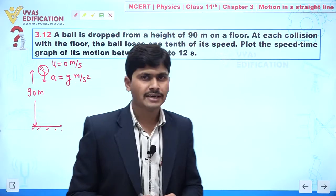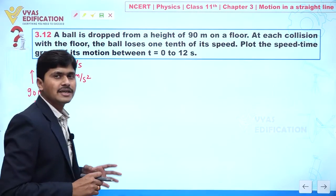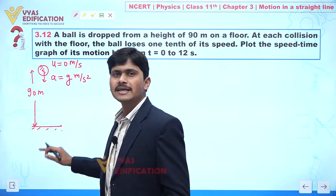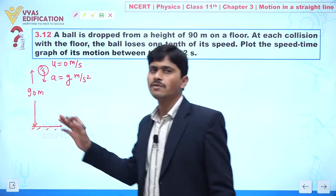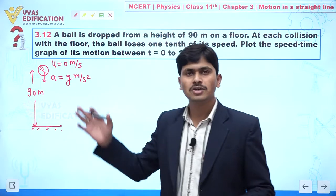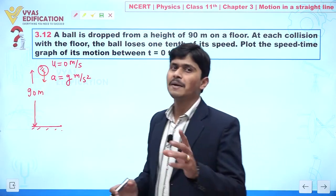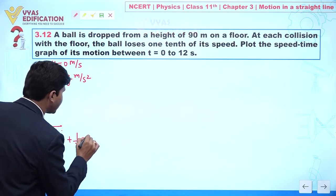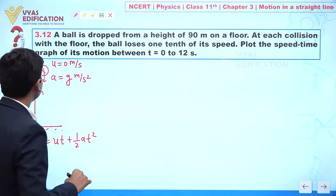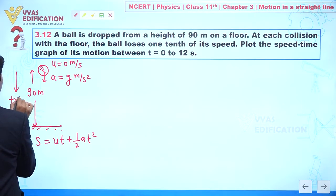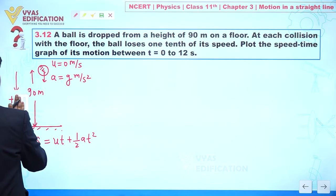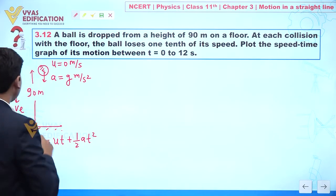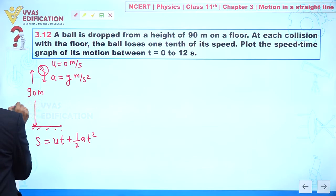Our first objective is to find the total time taken by this body to strike the ground. In the case of free fall, this body is falling under the influence of gravity, so we can apply the equation of motion: s equal to ut plus half of at squared. Taking the downward direction as positive.